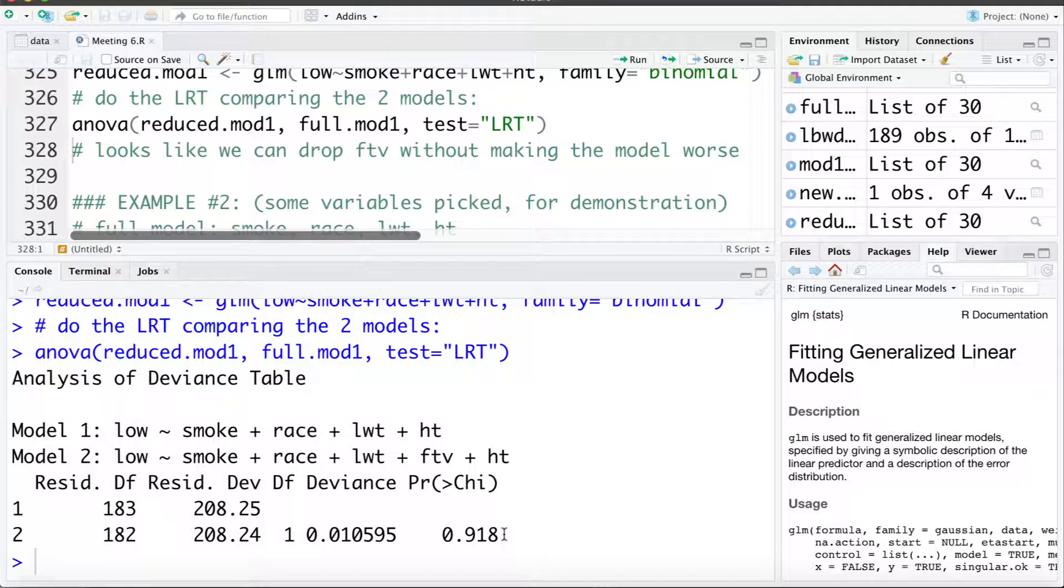Now of course, if we're building an effect size model and FTV was a confounder, we might want to make different considerations and might choose to include it in the model for certain reasons. But here, just looking at purely predictive power, having FTV in the model does not improve the predictive power of the model. It's not a statistically significant predictor.